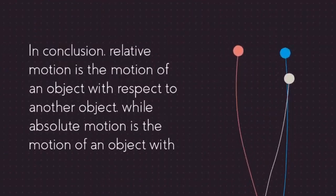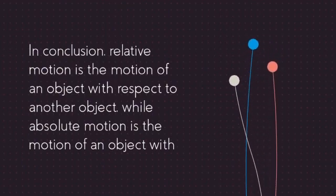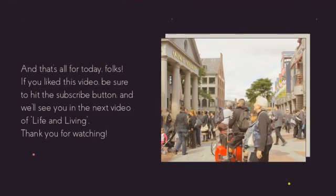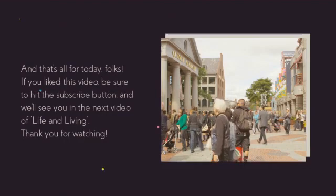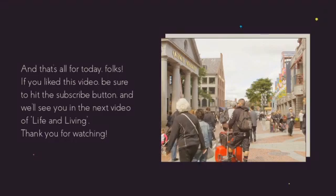In conclusion, relative motion is the motion of an object with respect to another object, while absolute motion is the motion of an object with respect to an absolute reference frame. And that's all for today, folks. If you liked this video, be sure to hit the subscribe button, and we'll see you in the next video of Life and Living. Thank you for watching.